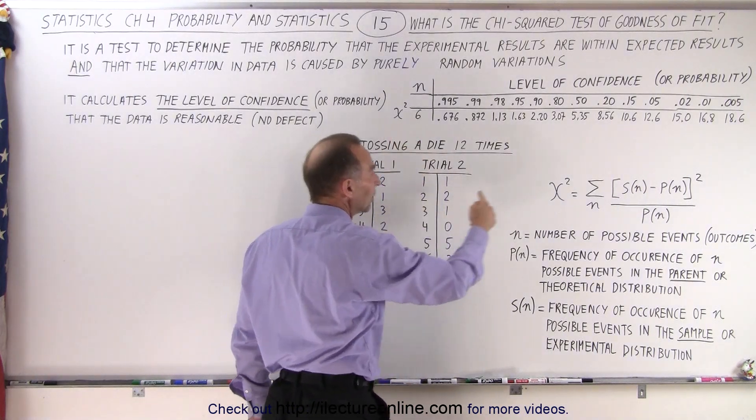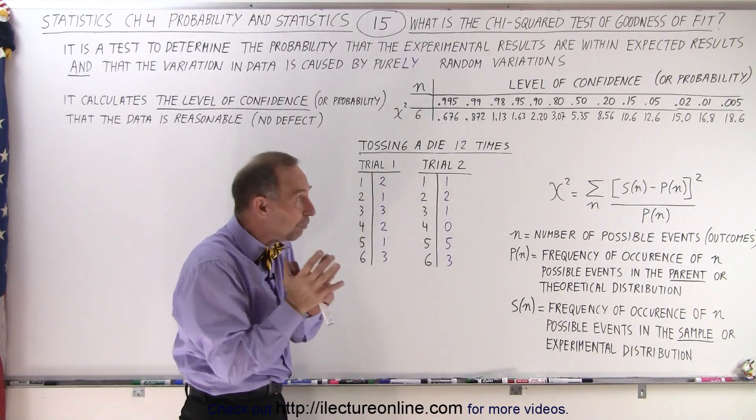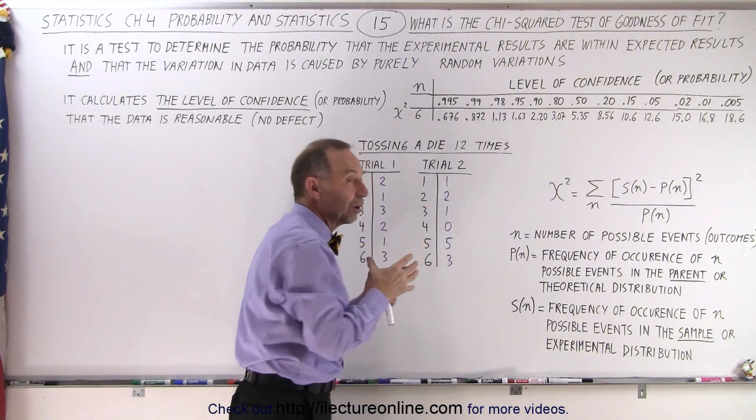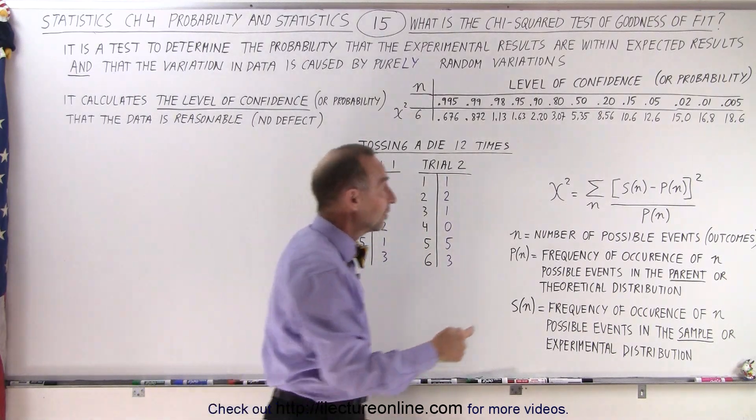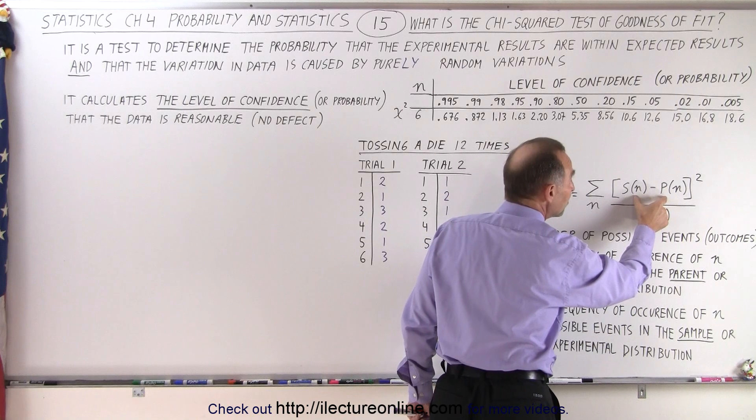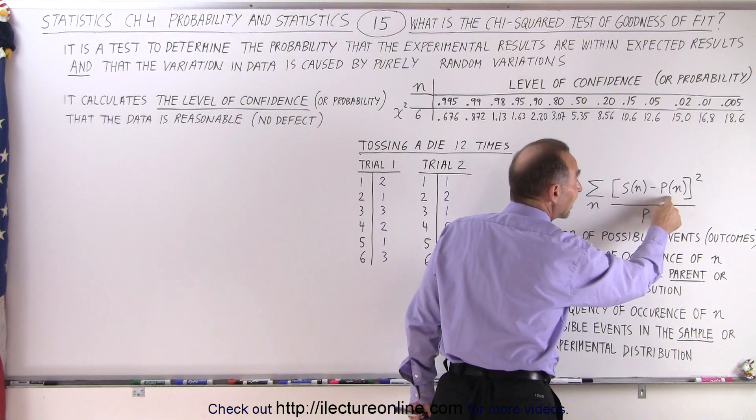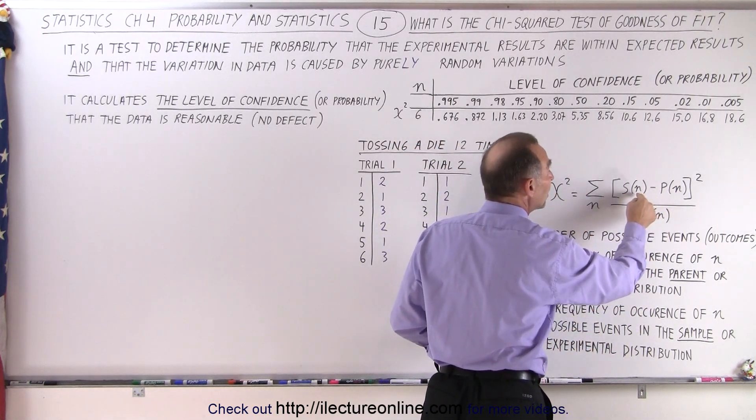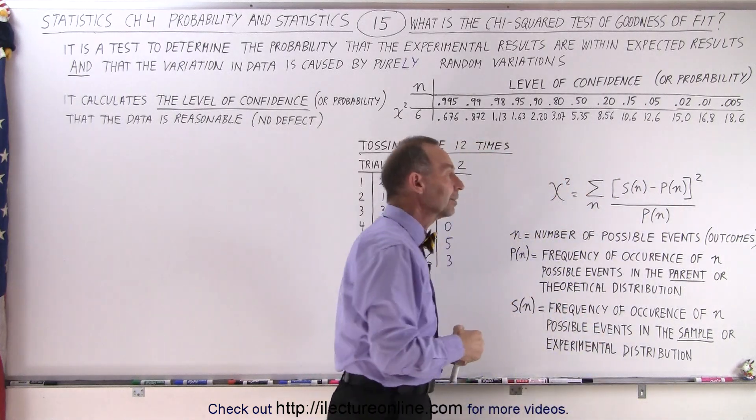Then here's chi squared. So we're going to calculate a value. Now, if chi squared is a small value, then we have very high level of confidence. If chi squared is a big value, then we have very low level of confidence. And of course, you can tell here that a small value means that there's very little difference between the experimental data and the theoretical data. If chi squared is a big number, then there's a large difference between the experimental data and the theoretical data.